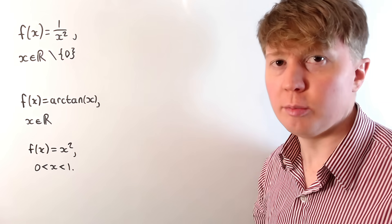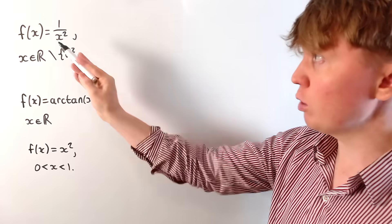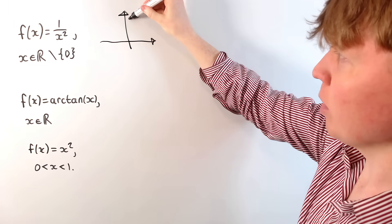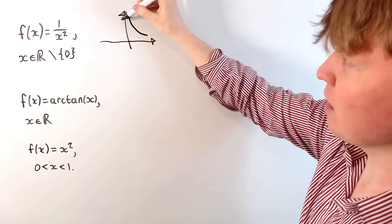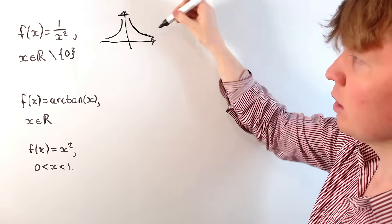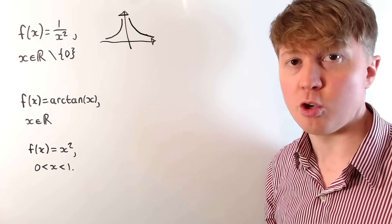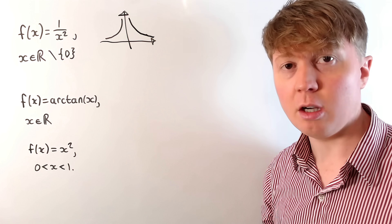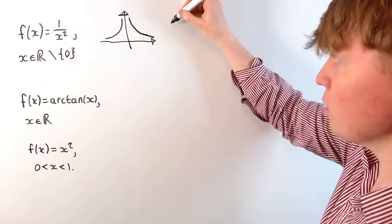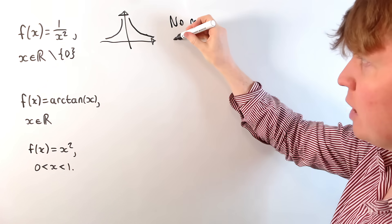If we look at some non-polynomial examples, we get some even more interesting behaviour. For example, if we've got the function 1/x² where x ≠ 0, then we know the graph looks like this, and it asymptotes towards 0 as x goes to positive or negative infinity. So there is no minimum here — the smallest value it can equal doesn't exist, because it can't actually be equal to 0, but it can get closer and closer to 0.